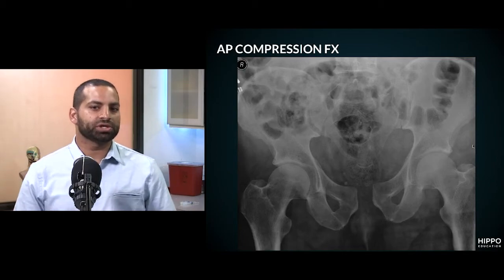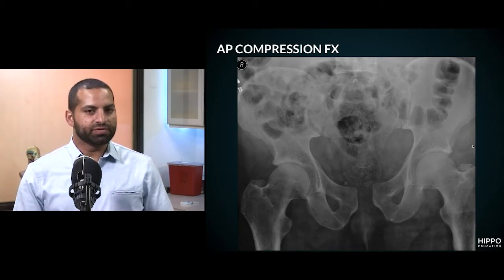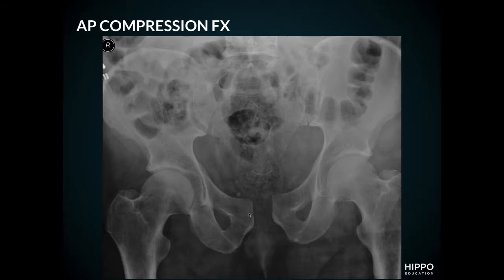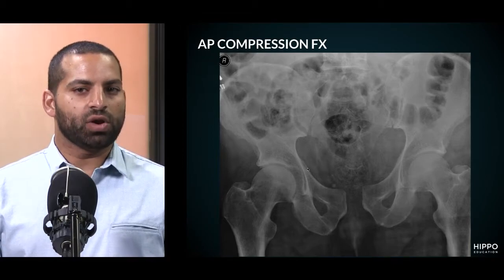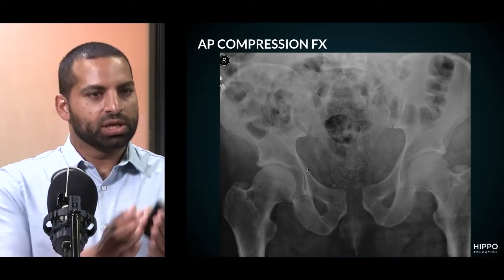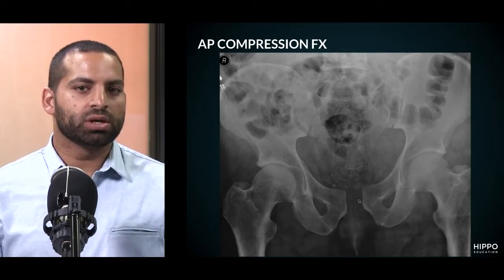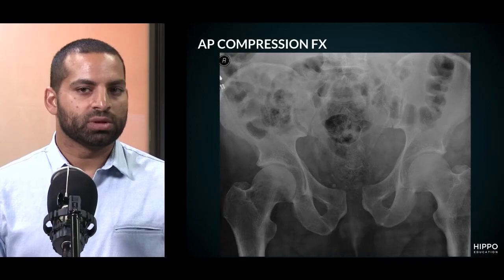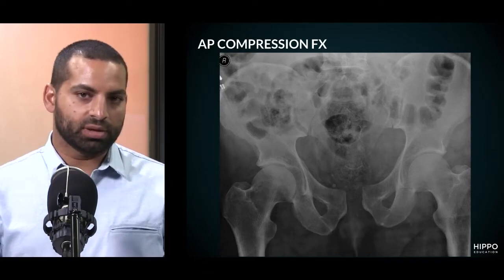Moving on to anterior-posterior compression fractures — imagine something squeezing the pelvis in an anterior-posterior dimension. You're seeing widening of the pubic symphysis. Because it's a rigid ring, if you see widening of one joint, look for a fracture or widening of another. Following the left iliopectineal line, the left sacroiliac joint looks normal, but then the right sacroiliac joint is widened. This is called an open-book fracture — imagine a book opening, with the pubic symphysis as the spine of the book and the whole pelvis opening up.